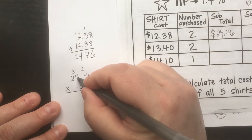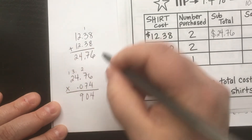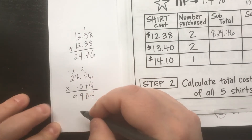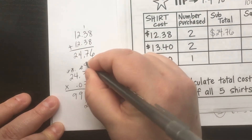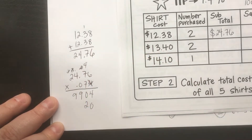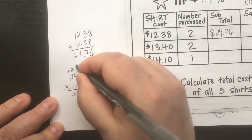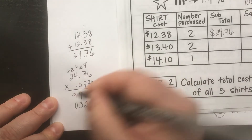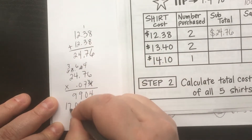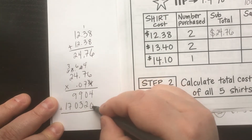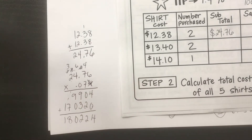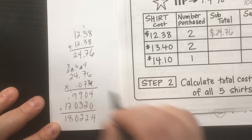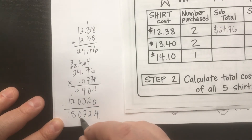Continuing: four times four is sixteen plus three is nineteen, four times two plus one. Moving to the sevens place: seven times six is forty-two, seven times seven is forty-nine plus four, seven times four is twenty-four plus six, seven times two is fourteen plus three. Adding it all up and placing our decimal — we have five decimal places total between both numbers, so we count over five places.